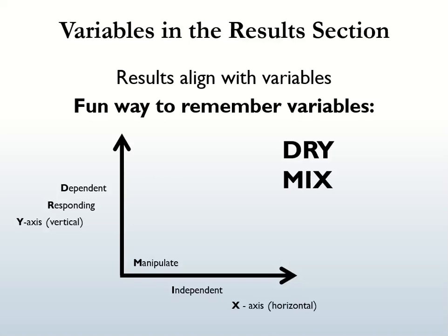In your results section, you will have to present data using tables and graphs. Here's a helpful way to remember how to represent your results using variables: the dependent variable is the variable that changes as a result of manipulating the independent variable — the dependent variable is represented on the y-axis. The independent variable is the variable that is manipulated and changed by the scientist — the independent variable is represented on the x-axis.